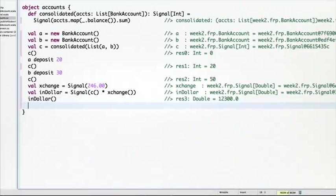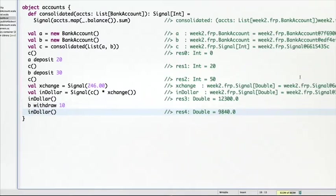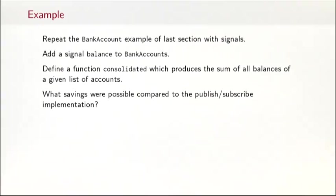And now we would have a different signal inDollar which has this value here. Now if we change, let's say b again, b.withdraw(10). And look at the result in dollar. And yes, then you see that the deduction in b is reflected in our inDollar result. So the signal C got updated and then the signal inDollar got updated as well.